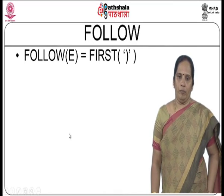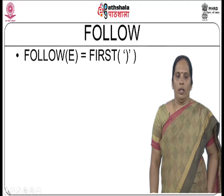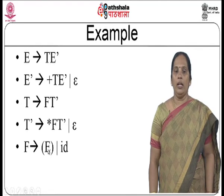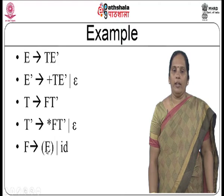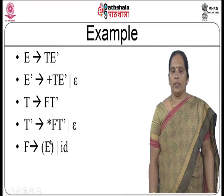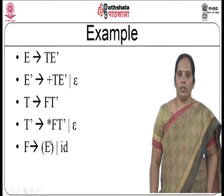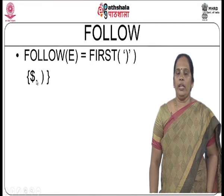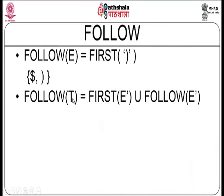Now computing follow. For follow of E: E is the start symbol so dollar is added. Also, from the production F produces open-parenthesis-E-close-parenthesis, follow of E contains first of close-parenthesis, which is close-parenthesis. Therefore follow of E equals {dollar, close-parenthesis}.